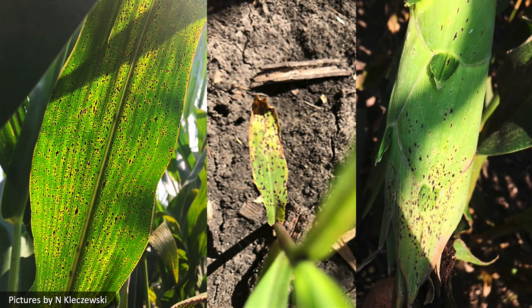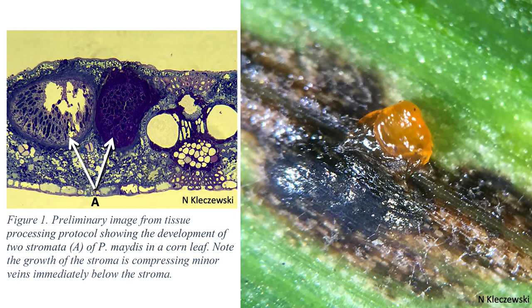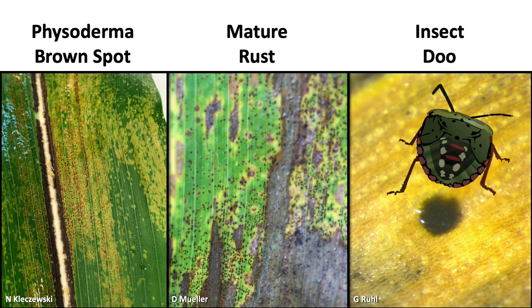Tar spot gets its name because it looks like your leaves or husks have been splashed with bits of tar. These are typically raised flecks, and they can be round or diamond-shaped in appearance. Inside each of those flecks are several small pear-shaped structures called perithecia, and those will contain ascospores. Those ascospores are extruded under wet conditions at night and are wind and rain dispersed to healthy plants or unaffected tissue, where they will cause infection and symptoms about 14 days later.